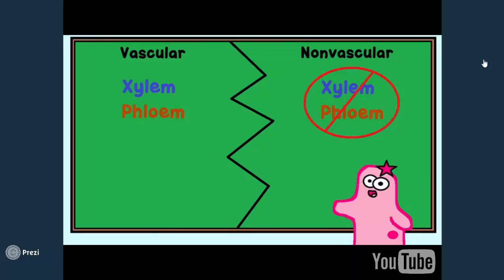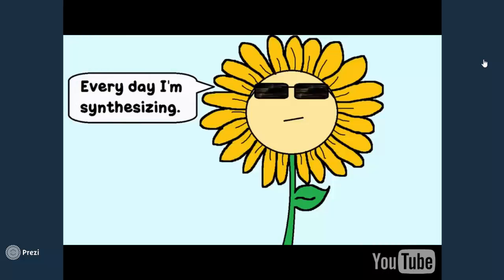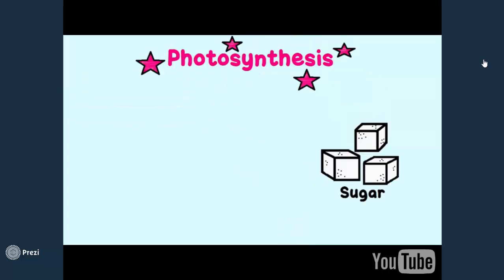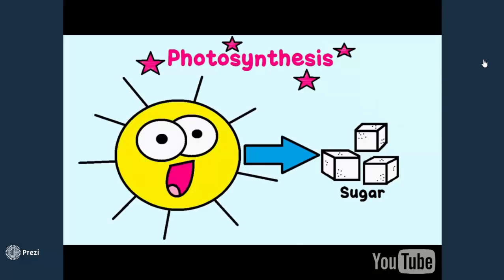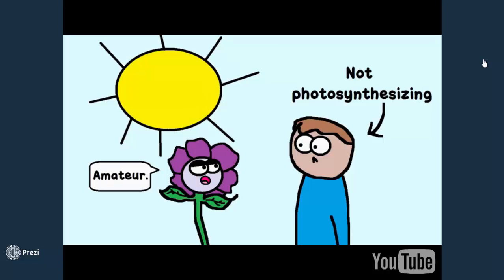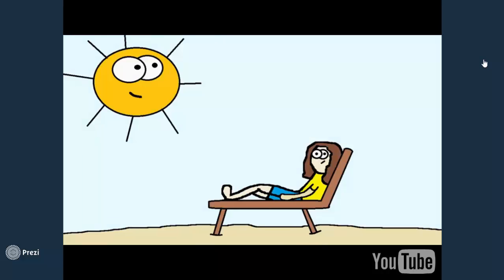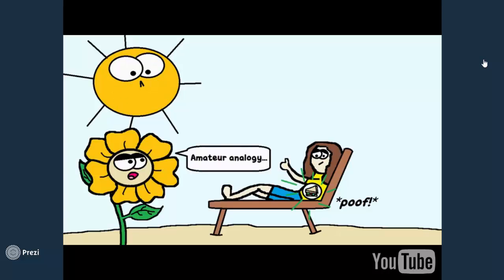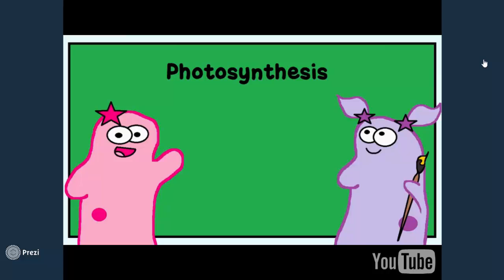So remember: vascular plants have xylem and phloem, vascular tissue; and non-vascular plants don't. Much of a plant's structure is designed to facilitate photosynthesis — the ability to make sugar, the plant's own food source, from sunlight. We cannot do this. You might be able to go to the kitchen to make a sandwich, but you're just preparing your food. Wouldn't it be amazing if you could sunbathe and conjure up a sandwich in your stomach? That analogy helps convey what a big deal photosynthesis really is.